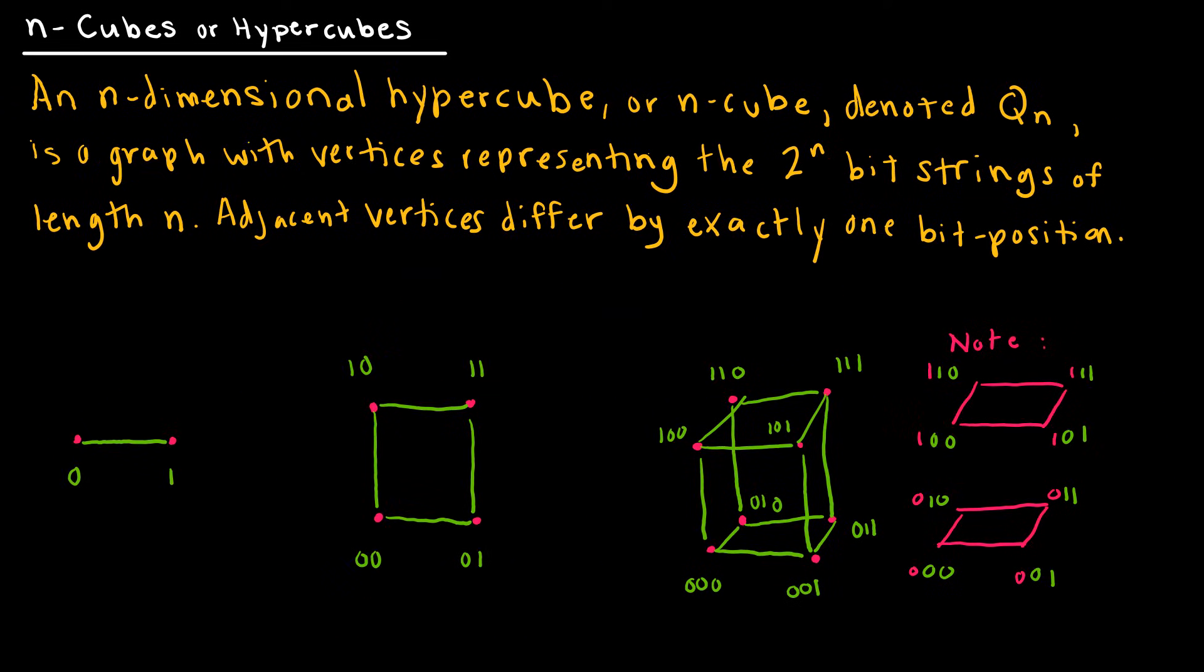An n-cube or hypercube is another type of special graph with notation Qn. We have a graph with vertices representing the 2^n bit strings of length n. It's multi-dimensional as you get larger, and each adjacent vertex differs by exactly one bit position.